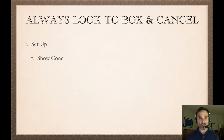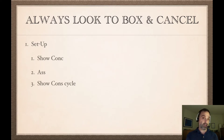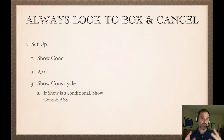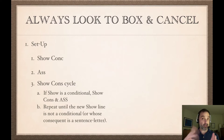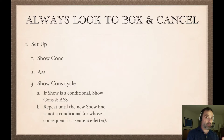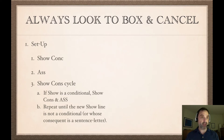First, there's a setup: we always show the conclusion and make an assumption. Then if we get into the show-consequent cycle — if what we're trying to show is a conditional — we'll say show the consequent, make another assumption, and repeat this process. If that sub-derivation is itself trying to show a conditional, we say show consequent again, make an assumption, and at some point we'll no longer be trying to show a conditional and the cycle stops. That's the setup stage.